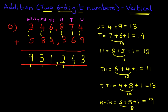And that is our answer. 931,243. Let's give that a nice big tick. And that is how we add two six-digit numbers using the vertical format.